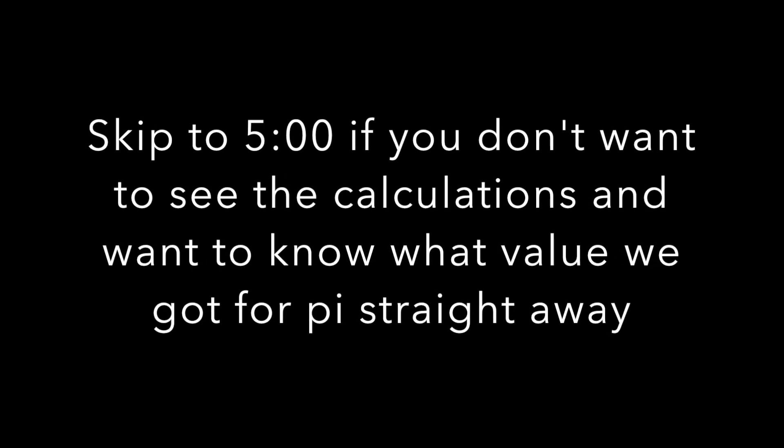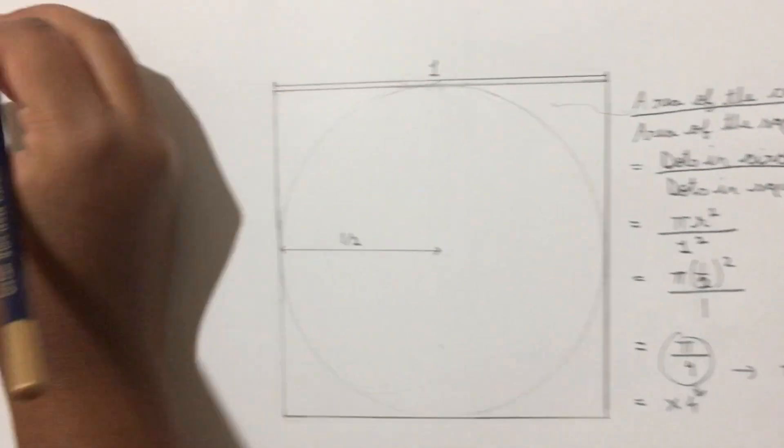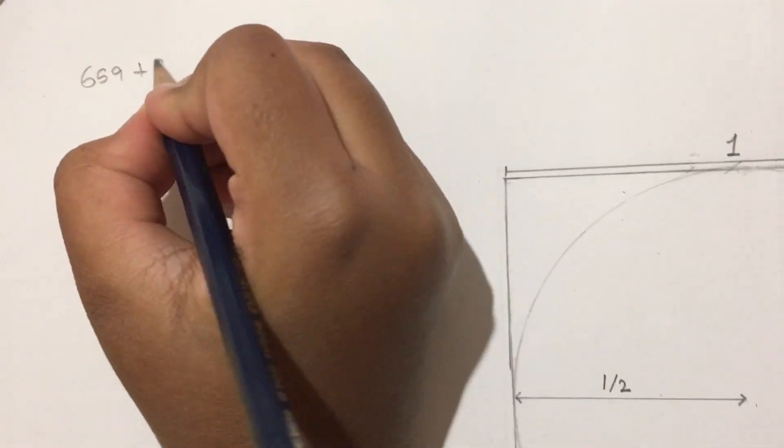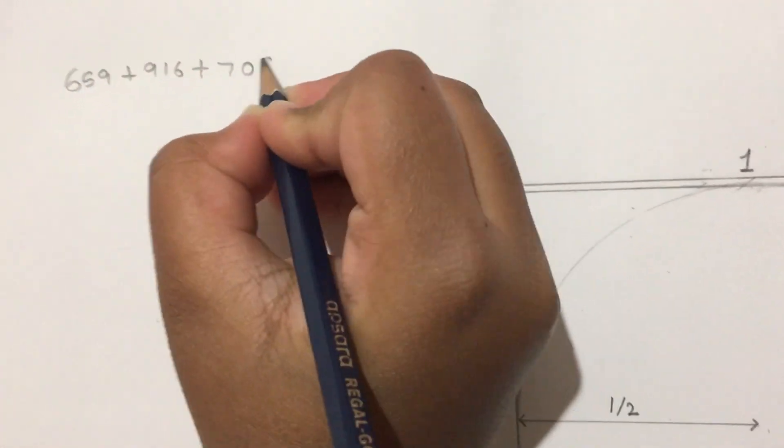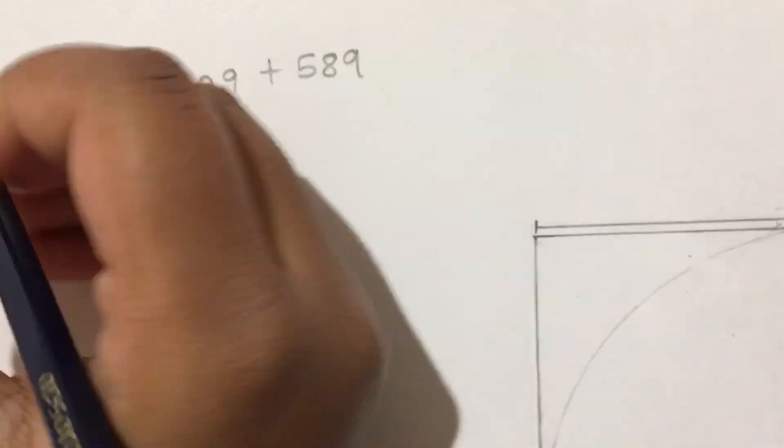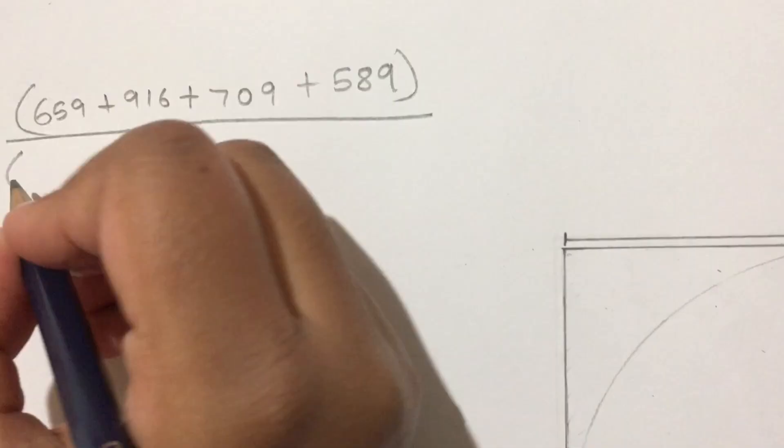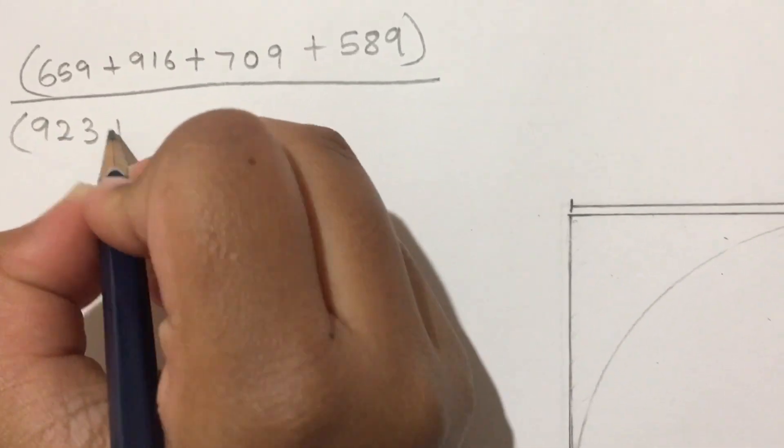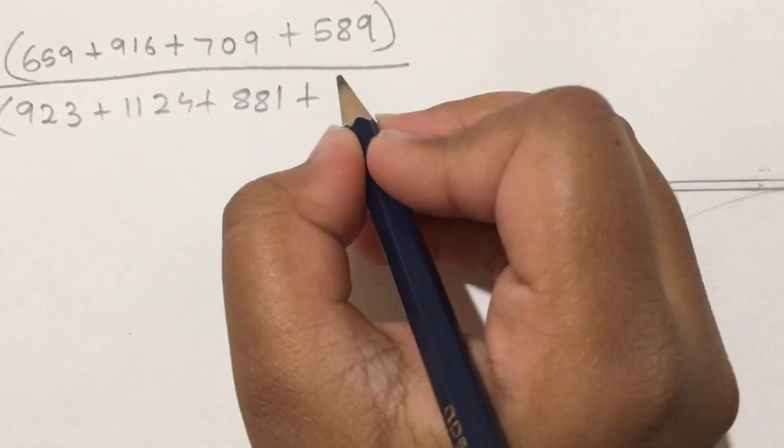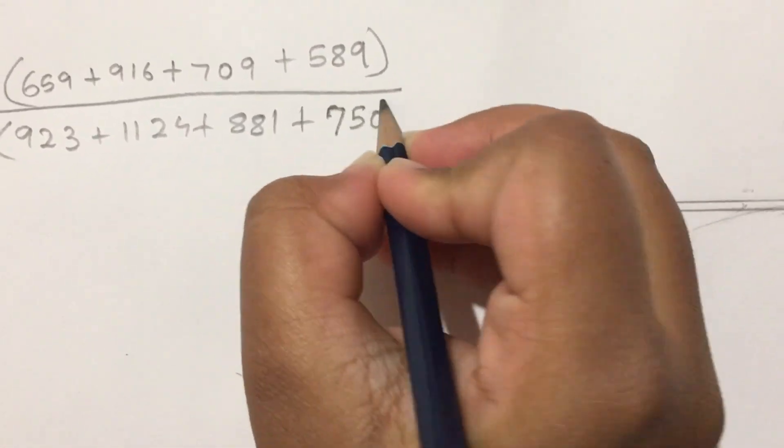Now I'm going to calculate pi by hand without a calculator. All that divided by 923 plus 1124 plus 881 plus 750.